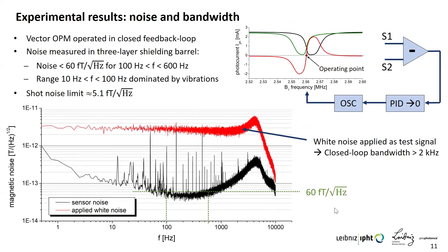We also measured noise and bandwidth. The OPM was operated in a feedback loop so that the operating point is always fixed, and the noise was measured in a three-layer mu-metal shielding barrel. The noise was better than 60 femtoteslas per root hertz in the range between 100 Hz and 600 Hz, going down to below 50 femtoteslas at some frequencies. Between 10 Hz and 100 Hz the noise is dominated by vibrations of the shielding barrel, so the intrinsic spectrum could be better. The shot noise is around 5 femtoteslas per root hertz. The bandwidth in closed-loop operation is about 2 kilohertz.